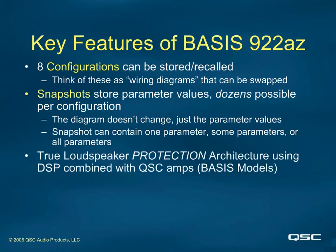True loudspeaker protection architecture is a feature we won't explore in detail here — it's only being mentioned to make you aware of it. Because the Basis knows all about the audio signal as it passes through the DSP, and it knows what the amp and loudspeaker load is doing to that audio at all times, the Basis can optimize the audio power limiter function in real time. This maximizes the matchup of the amplifier to the load, while providing a much smoother, more transparent limiting function and protection of the loudspeaker.